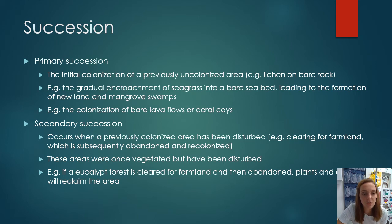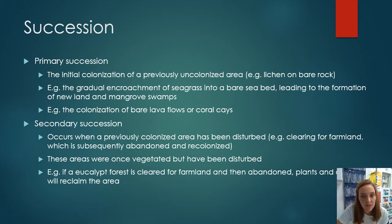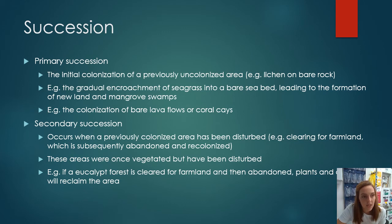Primary and secondary succession are two important types. Primary succession involves colonizing a previously uncolonized area — such as bare rock being inhabited by lichens, seagrass coming onto a bare seabed, or bare lava flows being colonized. Secondary succession occurs when there is a disturbance to a previously colonized area — such as clearing for farmland, burnt areas, or areas where floods have disturbed established vegetation. Secondary succession areas may still have some remnant nutrients in the soil.